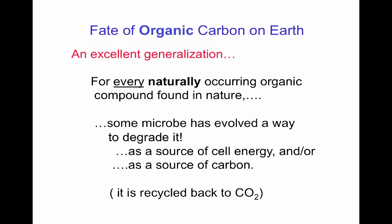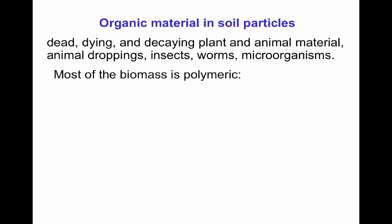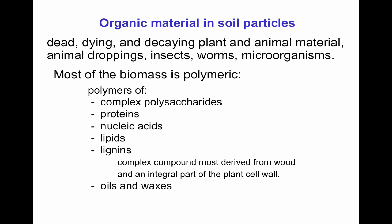For every naturally occurring compound, there is a microbe that can use it either as an energy source or a carbon source, and it will always be recycled back as CO2. The organic matter found in soil particles includes dead, dying, or decaying plant or animal tissue, animal droppings, insects, worms, and microorganisms. The major biomass is polymeric: polysaccharides, proteins, nucleic acids, lipids, and lignins. Lignins are complex compounds derived from wood and integral to the cell wall. Oils and waxes from animal or plant origin are also present.